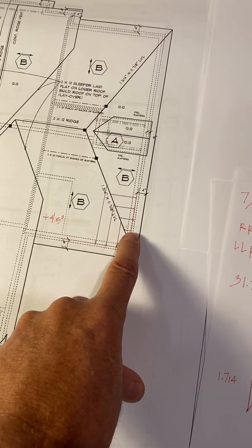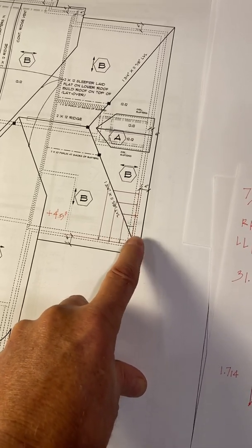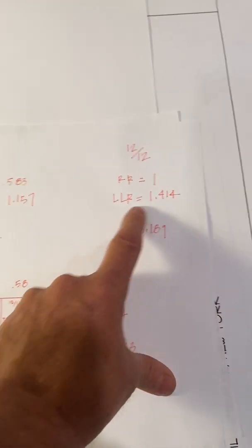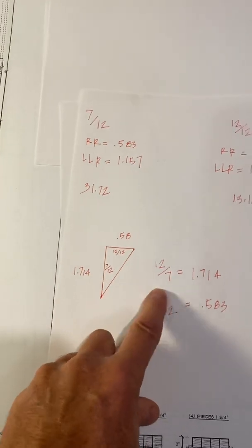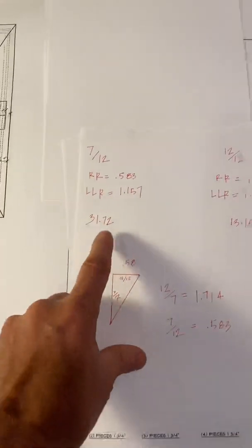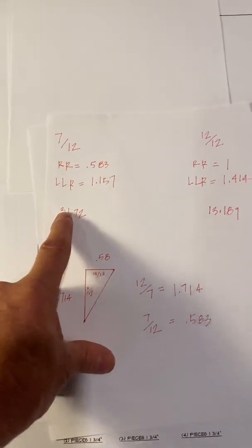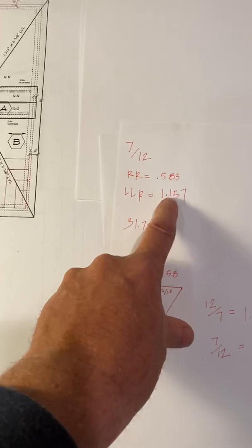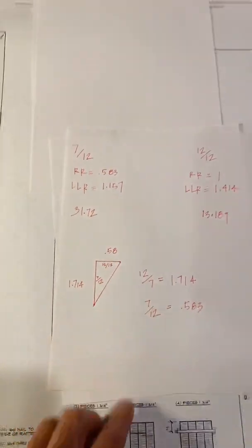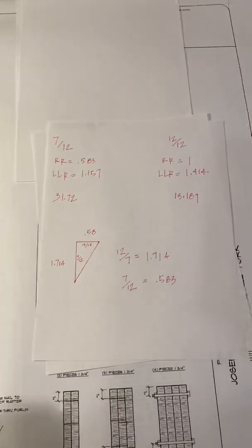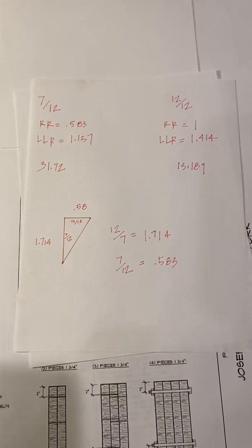So that means it travels an inch and a half up the rake for every 1 inch it travels on the level. These are the line length ratios multiplied by the factor and then by the on-center spacing will give you the common difference, and it doesn't matter which order. You can multiply 16 by the line length ratio times the factor, or you can do the factor times the line length ratio times 16. Because it's multiplication, it doesn't matter what order.